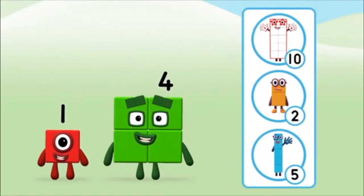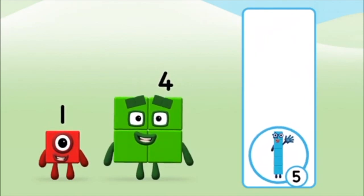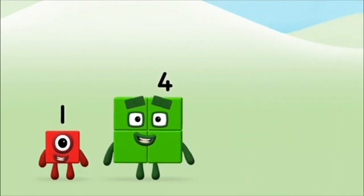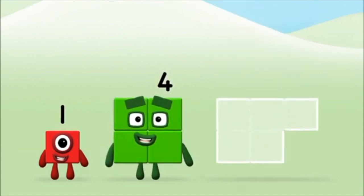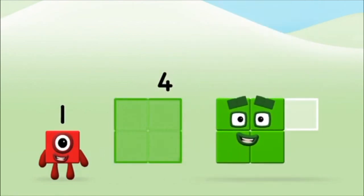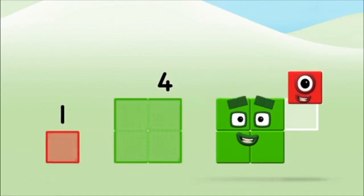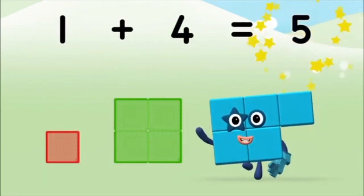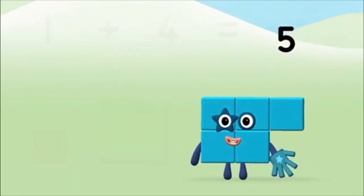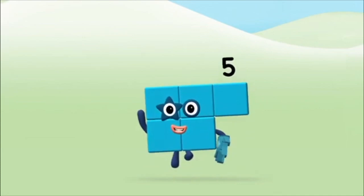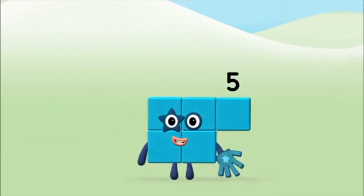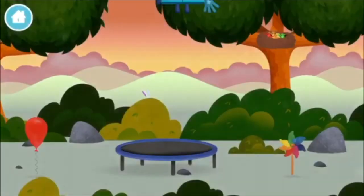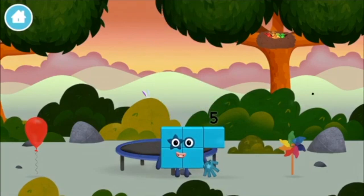What number block will you make when you add these two number blocks together? That's the correct answer! Add the number blocks together! Four! One plus four equals five! Congratulations! You made number block five! You made a new number block!